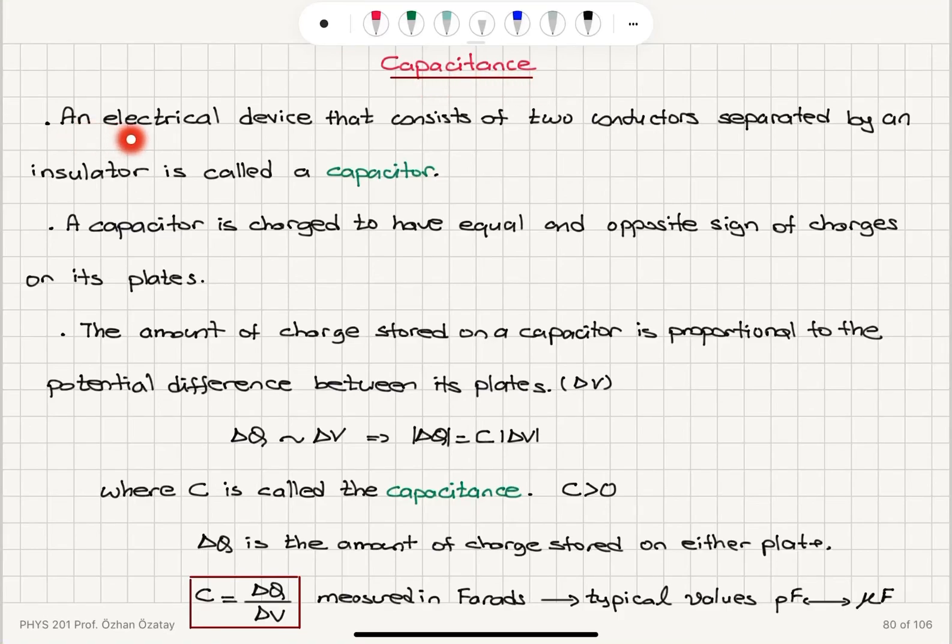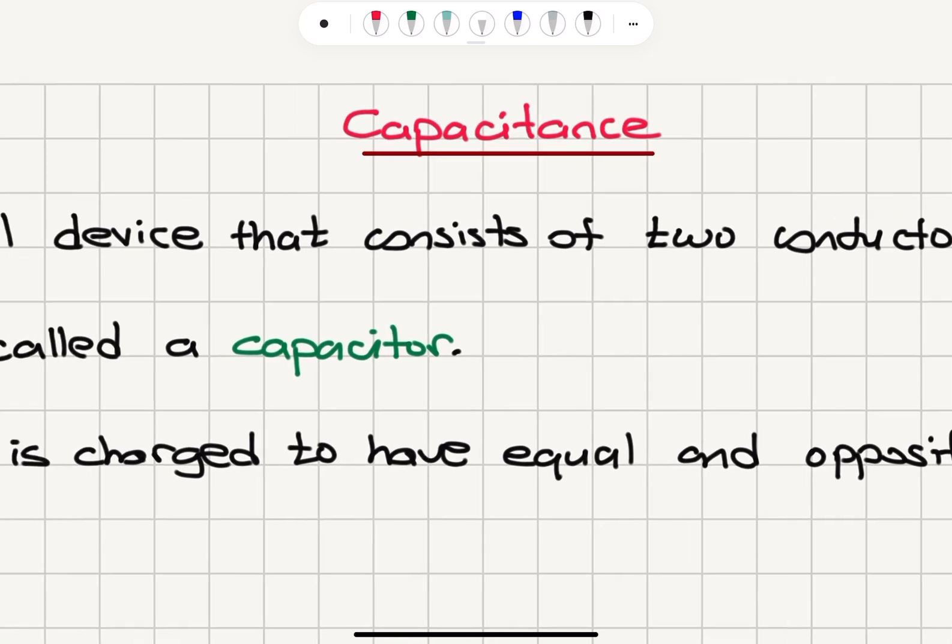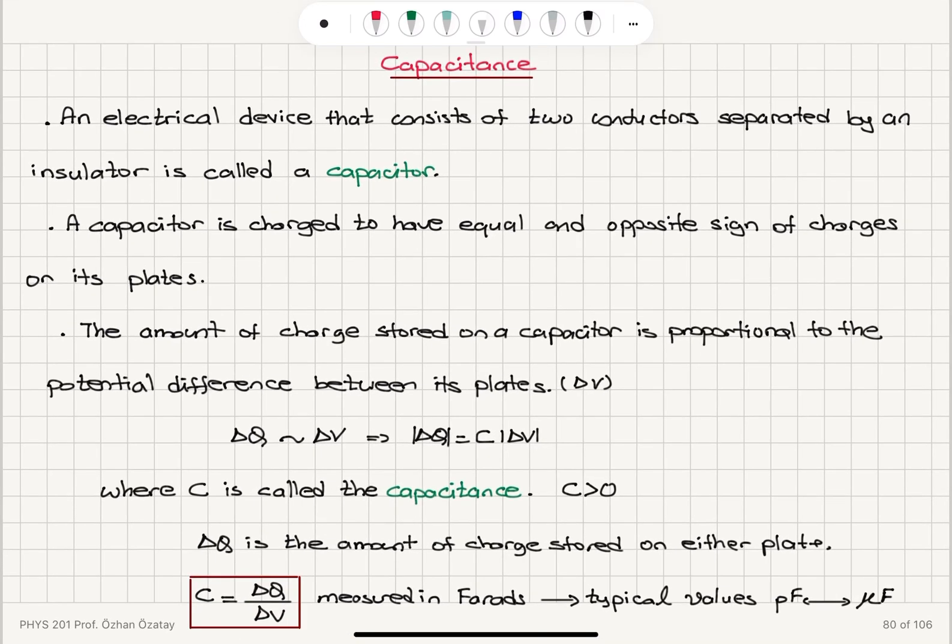Capacitance. An electrical device that consists of two conductors separated by an insulator is called a capacitor. We need to have two conductors separated by an insulator. This can be, for example, two parallel plates of metal separated by glass or some other insulator.